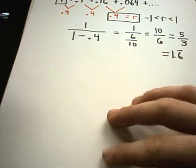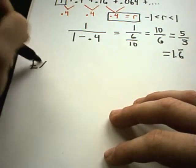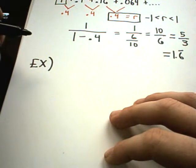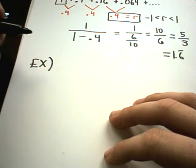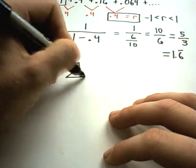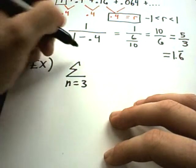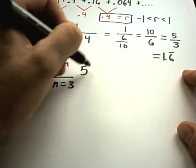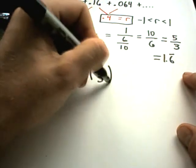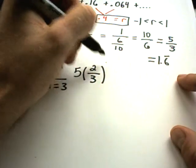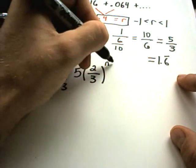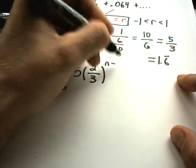Let's look at another one here. Suppose I have n equals 3 to infinity. And let's make it 5 times 2 thirds, say to the n minus 1.